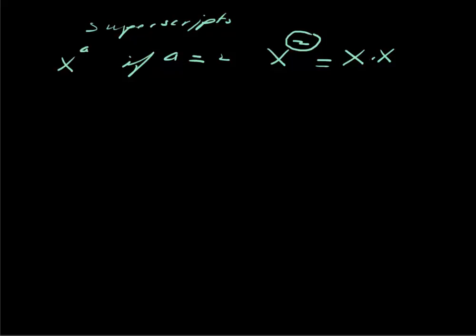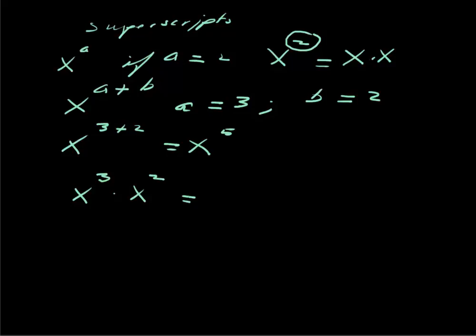Now if we had x to the a plus b, and let's say that a is equal to 3 and b is equal to 2, we have x to the 3 plus 2, which equals x to the fifth. But we could also say this is equal to x cubed times x squared, and these are equivalent.